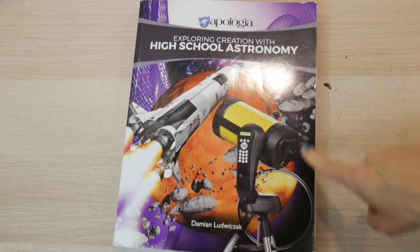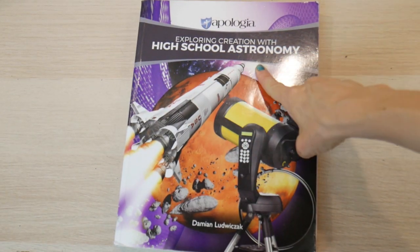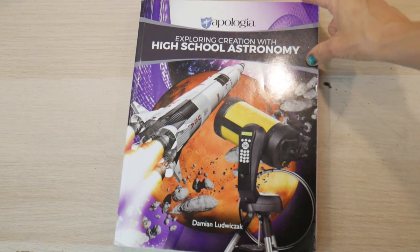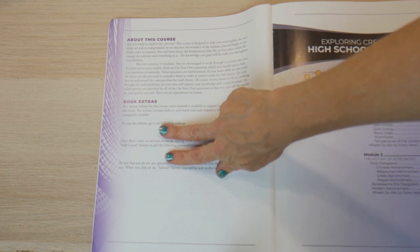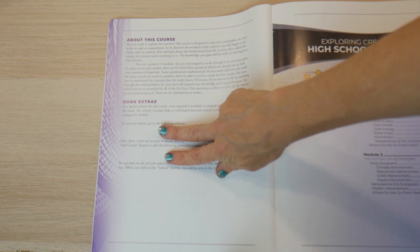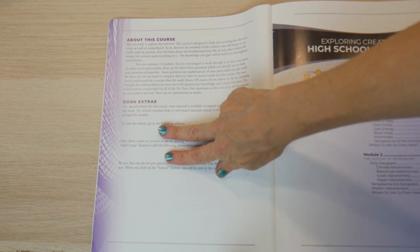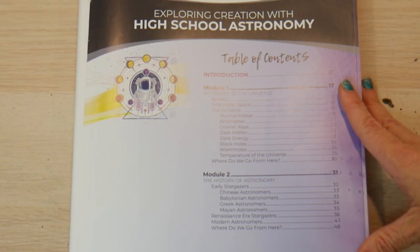So here is the book right here, Exploring Creation High School Astronomy by Apologia. It does come with an introduction and like all Apologia books it comes with book extras. These high school books also come with some extra material that you can find online. And here is your table of contents.